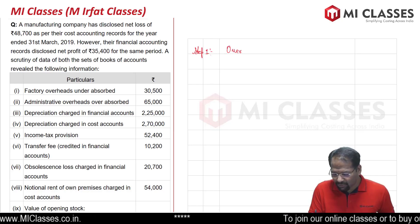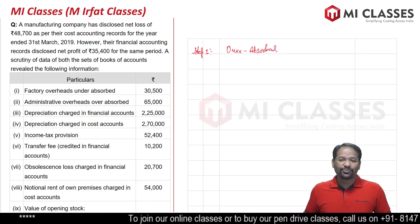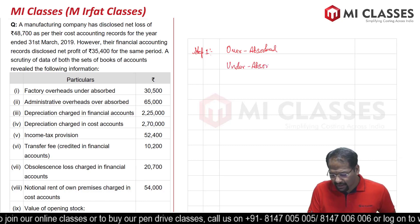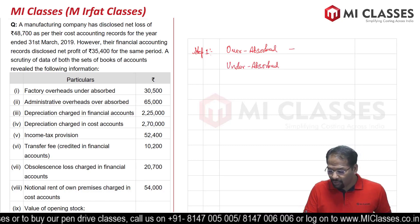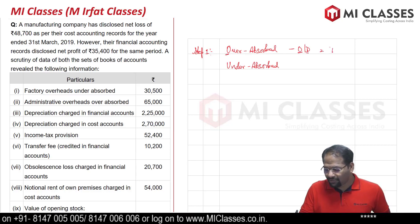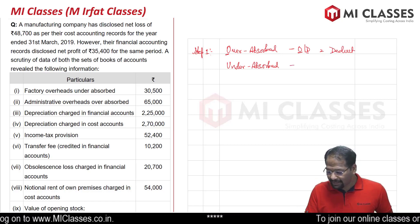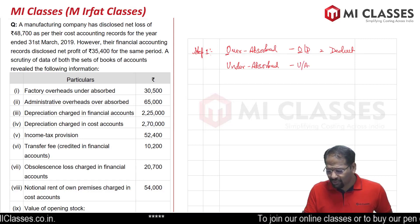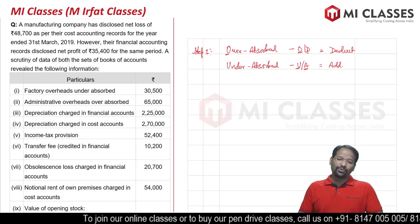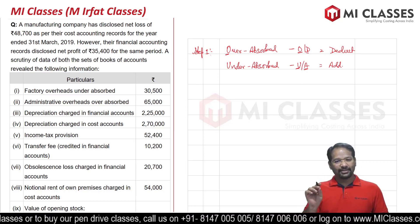Remember, over absorbed and under absorbed are terms generally used for cost accounting. When we start our reconciliation from financial accounting profit: for over absorbed, remember 'OD' — O for over absorbed, D for deduct — we are always going to deduct it. For under absorbed, remember 'UA' — under absorbed is always going to be added. Just remember this trick.